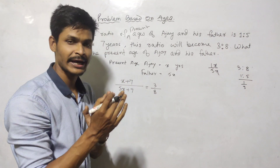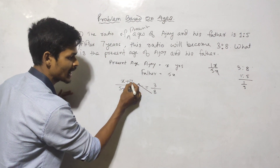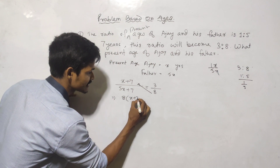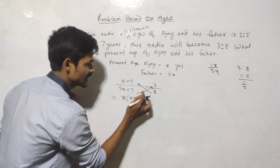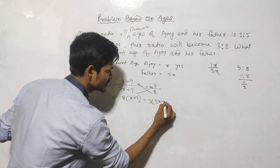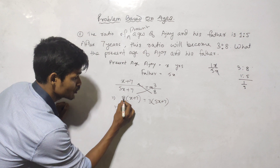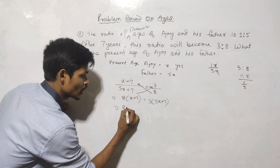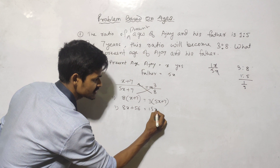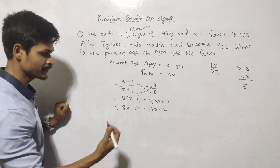We will solve this equation. We multiply 8 into (x + 7) and 3 into (5x + 7). So 8 into x is 8x, plus 56, and 3 into 5x is 15x, plus 21.